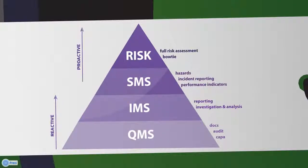When we say the ideal scenario is a fully integrated management system, let me outline how management systems have developed over the years. The baseline is an effective QMS incorporating the areas of document, audit and CAPA, followed by incident reporting and investigation, providing the ability to manage reporting and investigation and the subsequent recommendations and learnings. This follows on to full-blown SMS — meaning the ability to be more proactive, looking to identify hazards, incident reporting, risk assessments and safety performance indicators, all built on the solid platform of quality assurance principles.